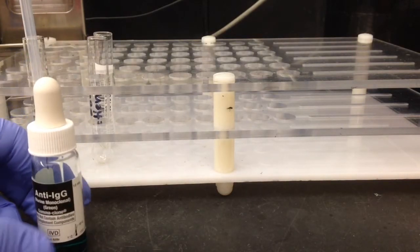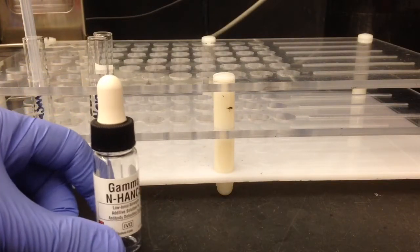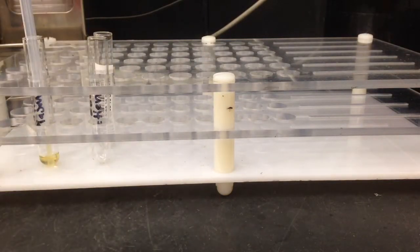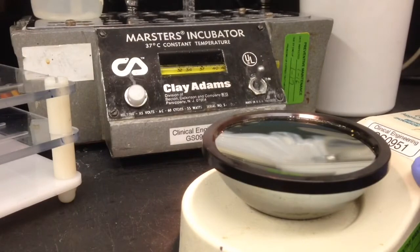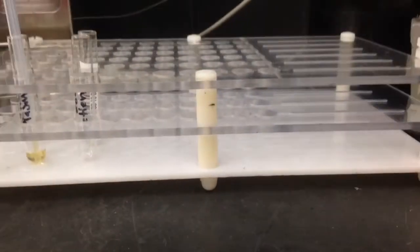You're also going to need anti-human globulin. I'm going to be using Enhance, which is a low ionic strength solution that increases the affinity of antibodies to antigens. You're going to need a timer, an agglutination viewer, and an incubator set at 37 degrees Celsius.